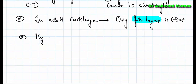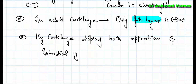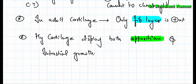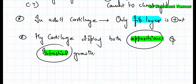Hyaline cartilage undergoes both appositional and interstitial growth. Interstitial growth means new cartilage is formed within the existing cartilage by division and differentiation of the chondrocytes present inside.